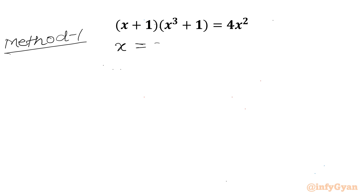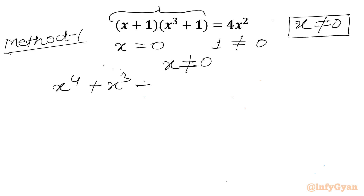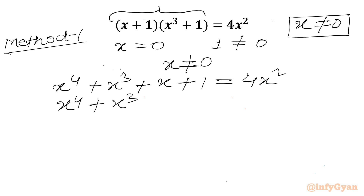I will check our equation at x equal to 0. So the left hand side will be 1 times 1, and the right hand side will be 0, which is not true. So I can write that for our equation, x cannot be 0. Let us multiply these two brackets. So I will write x⁴ + x³ + x + 1 = 4x², or we can write x⁴ + x³ - 4x² + x + 1 = 0.